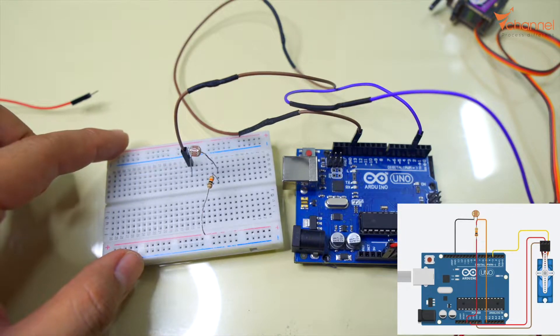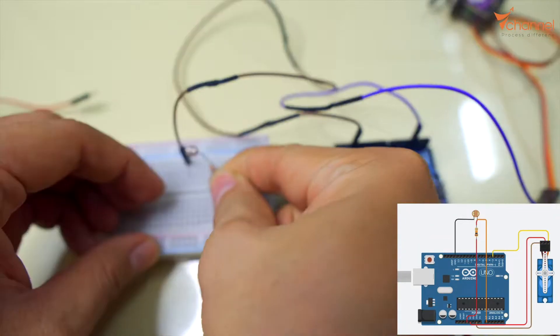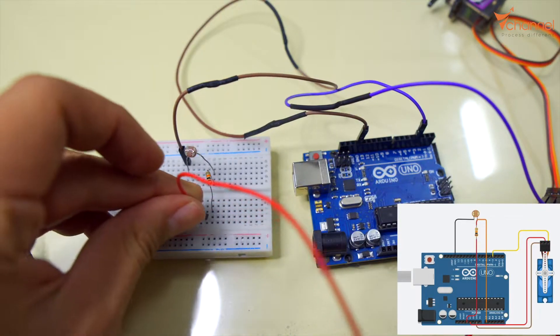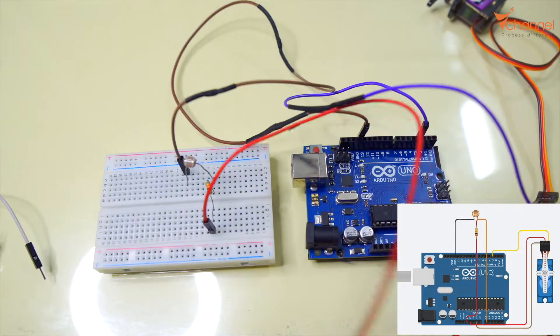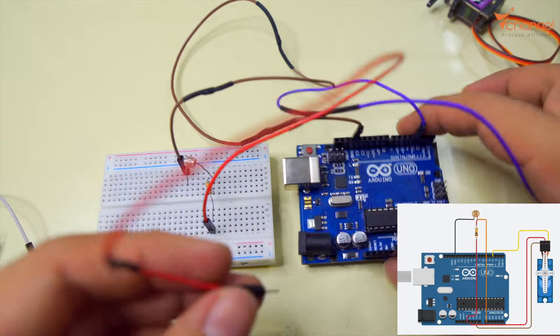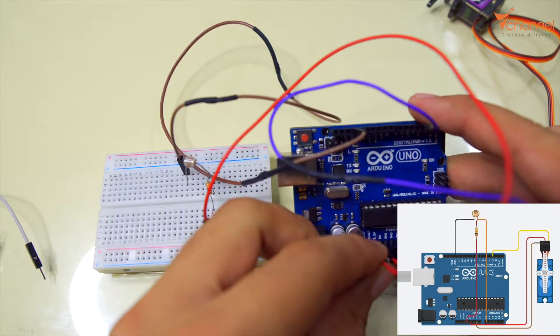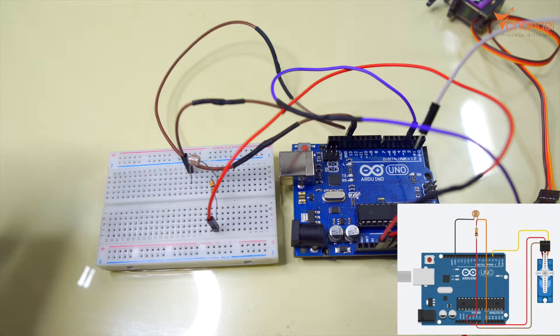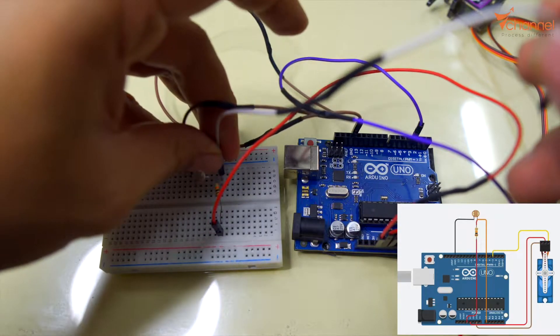And the rest connector of resistor, we connect to 5 volt of Arduino. One connector of photo resistor, we connect to A0 of Arduino.